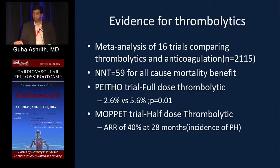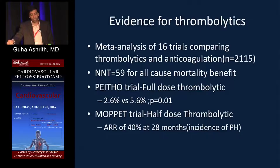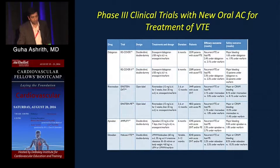The MOPPET trial's primary endpoint was incidence of pulmonary hypertension at long-term follow-up, showing a 40% absolute risk reduction at 28 months. Overall, both trials demonstrated that thrombolytics benefit not only the sickest patients with hypotension and bradycardia, but also submassive and intermediate PE patients — albeit with increased bleeding risk.